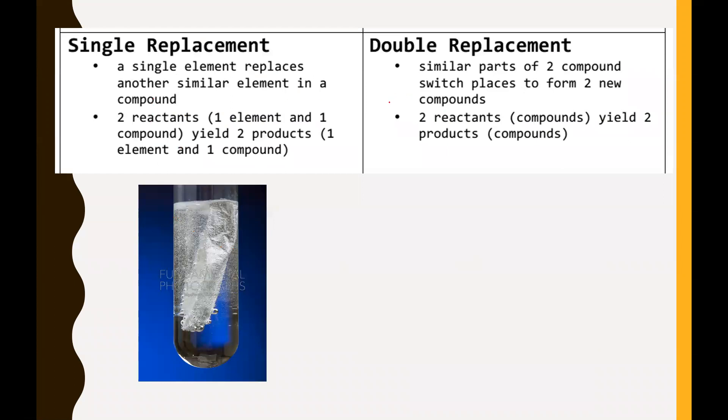All right, the other kind we've looked at before are single replacement reactions and double replacement reactions. So a single replacement is where a single element replaces another similar element in a compound. So this is where you'll have two reactants with in which one of them is an element and one of them is a compound, yielding two products, one in which is an element and one of which is a compound. That's kind of what this image right here is showing. This is an image showing what happens if you put aluminum foil, so just plain aluminum, in hydrochloric acid. So if you were to mix aluminum with hydrochloric acid, what happens is hydrogen gas gets released. That's what these bubbles are. So hydrogen gas comes out.